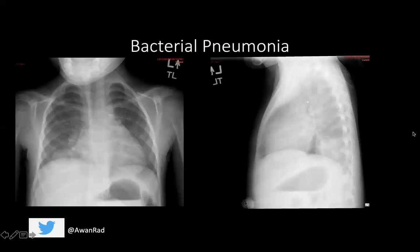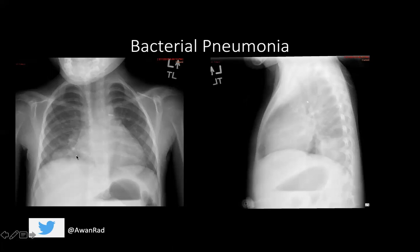In terms of bacterial pneumonia, you're going to see areas of lobar consolidation or opacity. On this frontal and lateral radiograph of the chest, you see this area of focal opacity within the right lower lobe. On the lateral view, you can see it posteriorly, silhouetting or overlying the thoracic spine. Notice that this pneumonia is confined to a specific lobe in the lung — that's a very characteristic feature of bacterial pneumonia. In this case, it's confined to the right lower lobe, not the right middle lobe, because we can see the right heart border very well. If the opacity was obscuring the right heart border, that would be within the right middle lobe.